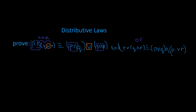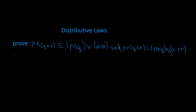So let's do the same thing with our statement over here. That's the best way to be able to tell what's happening. We write down our component statement variables, which are P, Q, and R. Then we've got to put the truth values for those.